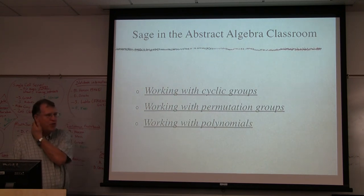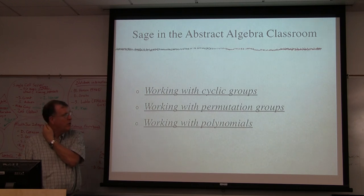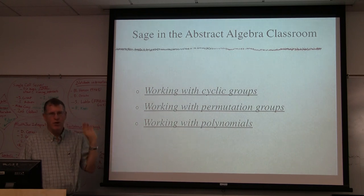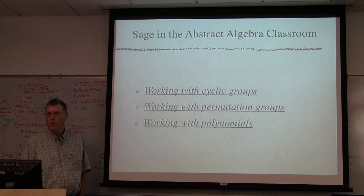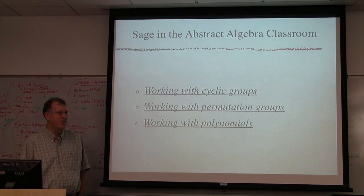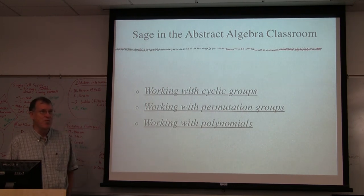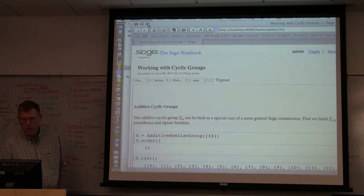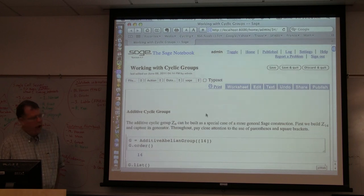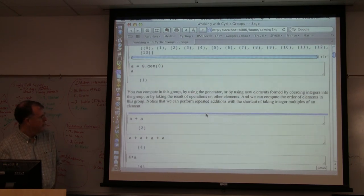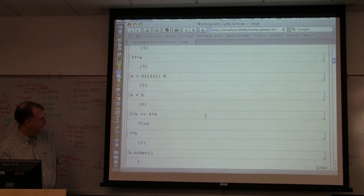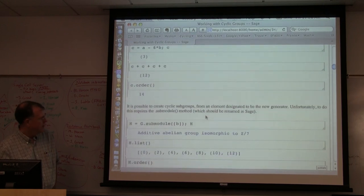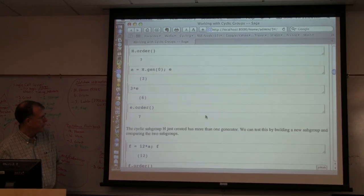I want to give a few examples of how you might actually use SAGE in an abstract algebra class. I've got some worksheets up here — these are based on some of the modules that Rob wrote. The solutions I put in are not supposed to be sophisticated; I tried to write answers like I thought my students might write them. One possibility is working with cyclic groups. You've got commands to work with additive cyclic groups, find orders, and work with abelian groups as modules over the integers.